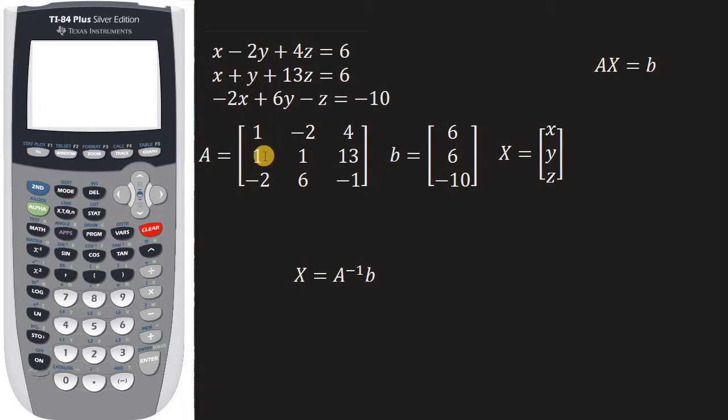1, 1, 13, 1, 1, 13. And then negative 2, 6, negative 1. And there's that.